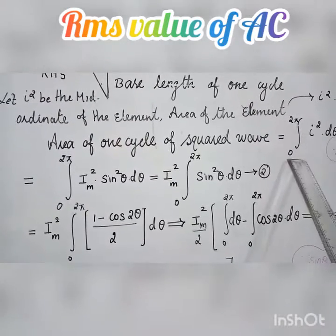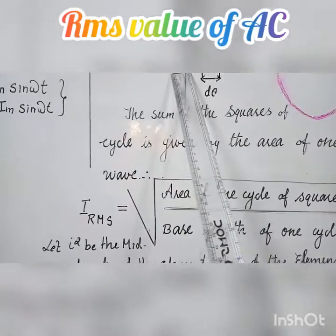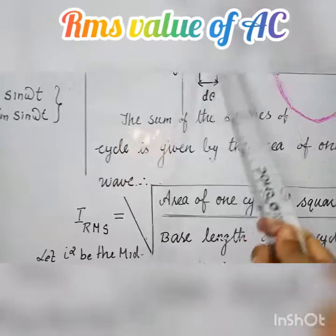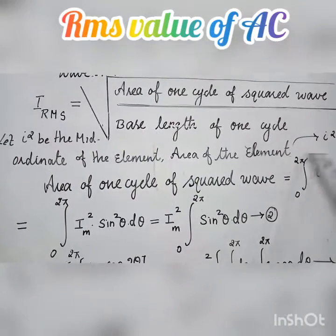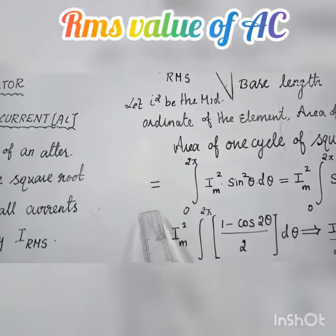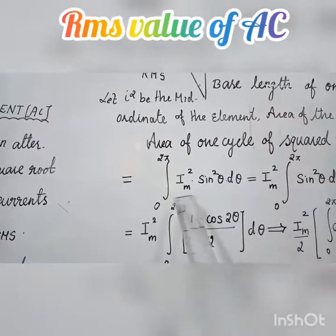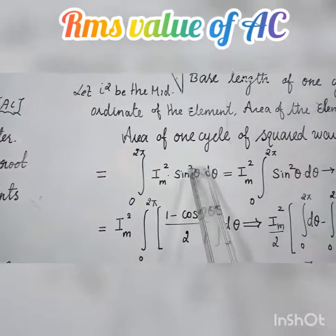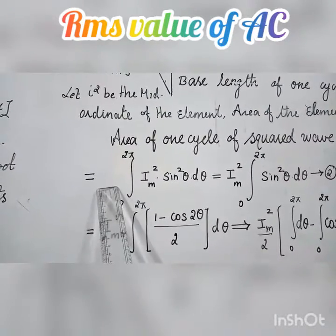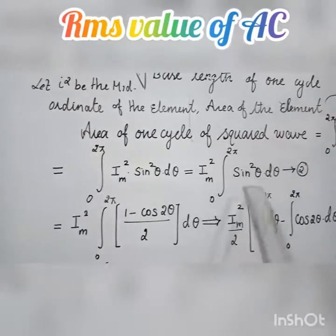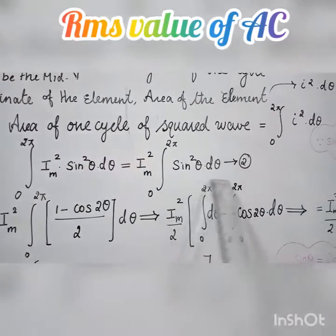The integration of I² dθ, with lower limit 0 to upper limit of one full cycle 2π, equals the integral from 0 to 2π of I_m² sin²(θ) dθ. Taking I_m² outside: I_m² times the integral from 0 to 2π of sin²(θ) dθ.